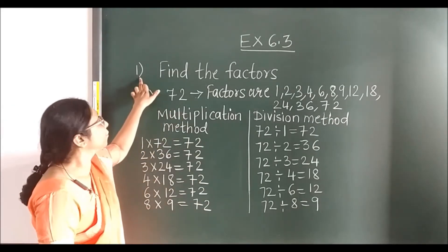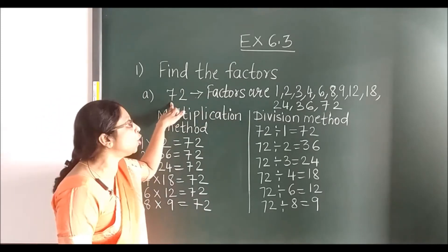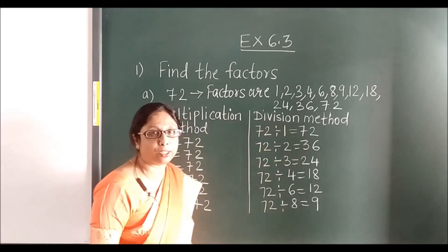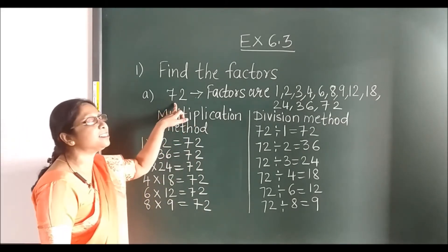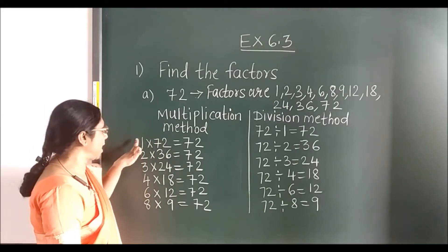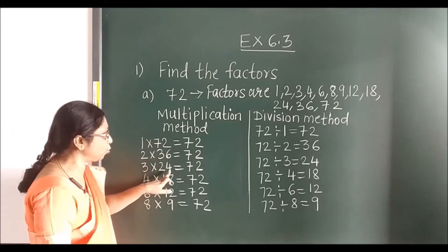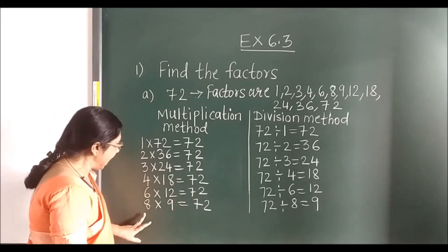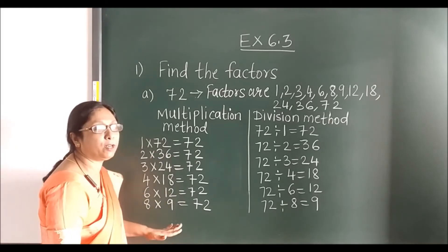In the first sum we will find the factors. The number is 72, and here you have to use two methods: multiplication method and division method. In the multiplication method, you have to see which tables 72 comes in. It comes in 2 — 2 into 36 is 72; 3 into 24 is 72; 4 into 18 is 72; 6 into 12 is 72; 8 into 9 is 72. The reverse, like 9 into 8, we will not write because the answer is the same.